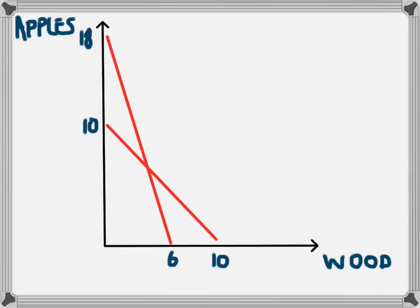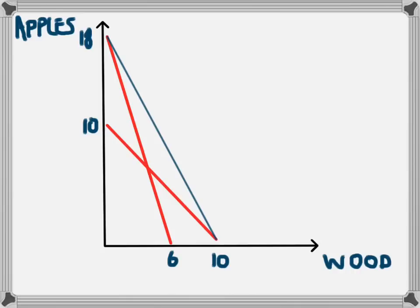We'll look at one more concept: combining the two production possibility frontiers together. The line at 10 apples and 10 wood was Country A, and the line at 18 apples and 6 wood was Country B. By working together — specializing in the products in which they have a comparative advantage and then trading — we're able to create a new combined production possibility frontier for both economies. Both economies are able to operate inside this blue line, which is further out than what they could have achieved staying within their own individual production possibility frontiers.